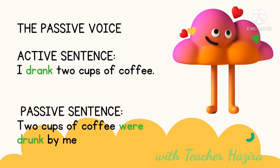The verb still remains, and 'by me' is now the agent. So what you have to know is that we use the passive voice to emphasize the action rather than who or what is responsible for it. The passive voice is usually formed with the verb 'be' — meaning 'is', 'are', 'was', or 'were' — in the appropriate form, and the past participle of the verb of the sentence.